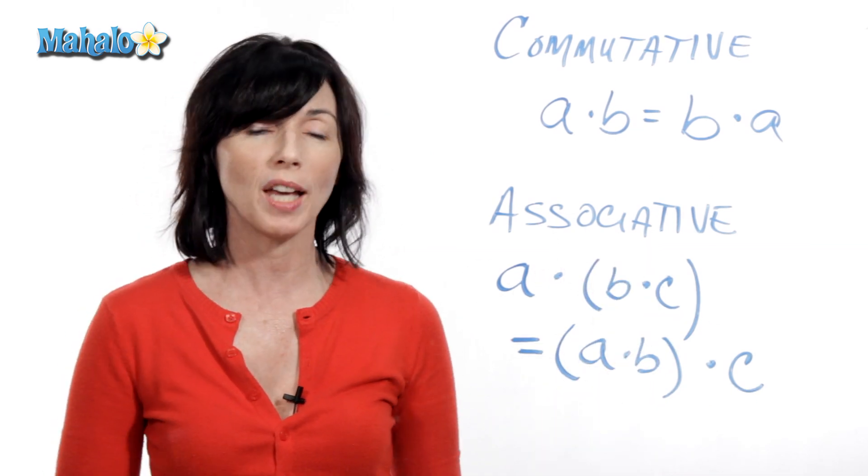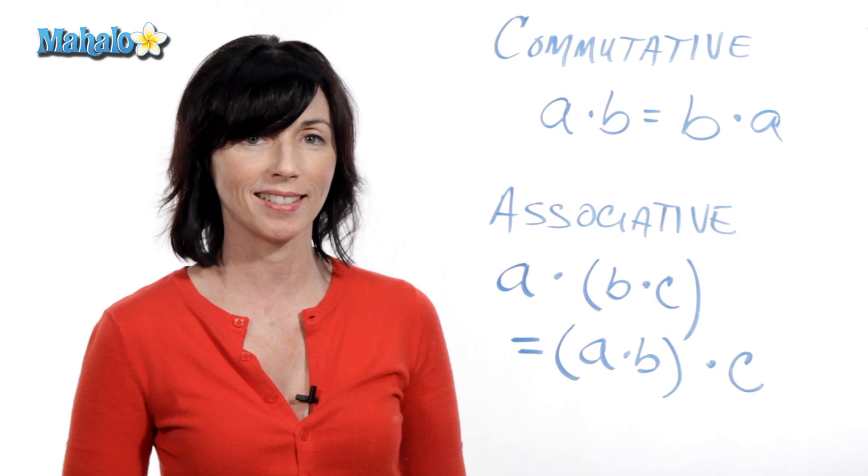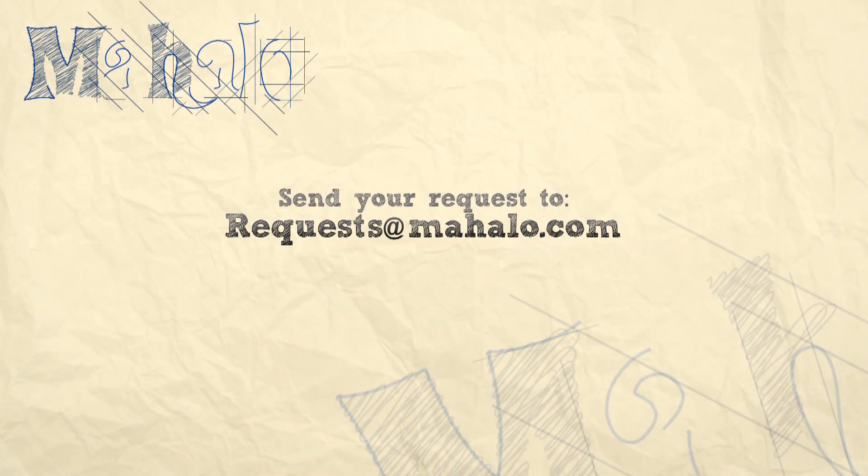That's the commutative and associative properties for multiplication. Thanks for learning with me today. If you want to know more about any of the topics we discussed, click on the links. And if you liked our videos, please subscribe to our channel. If you have any specific requests, please send them to requests at mahalo.com. I'll see you next time.